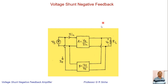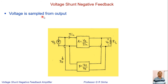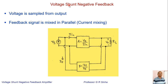This block diagram helps us understand the voltage shunt negative feedback amplifier. Why is it called 'voltage shunt'? Because we can see that voltage is sampled from the output — the output voltage is being sampled in parallel. Why is there a 'shunt' term? Because the feedback signal, which is beta times VO (that is IF), is mixed in parallel with the current source. So the mixing is current mixing.